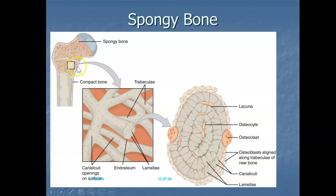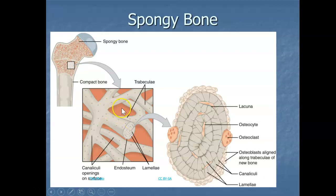Spongy bone, found in the epiphyses, has a needle-like structure called trabeculae. Each trabecula forms along lines of stress, which gives strength to the bone. This network of trabeculae also provides balance to the dense, heavy compact bone by making the bone lighter so muscles can move it more easily. The spaces within the spongy bone — shown in the pink area — are where red blood cells are made.